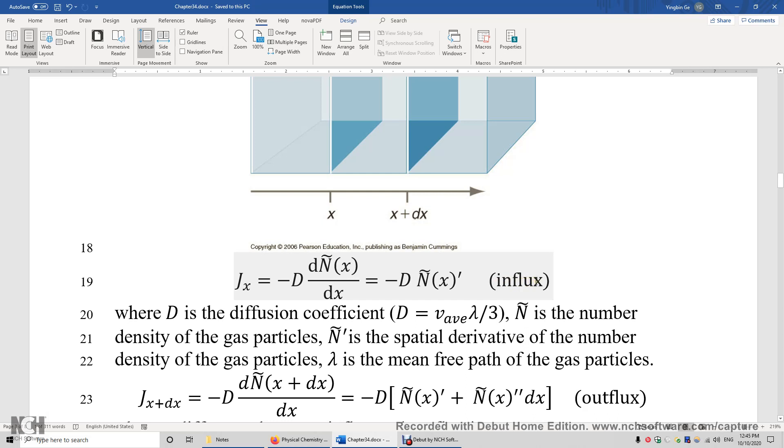This is the influx. J_x has this equation. And over here, this ṅ is the density of n. dṅ/dx is the gradient of the density.